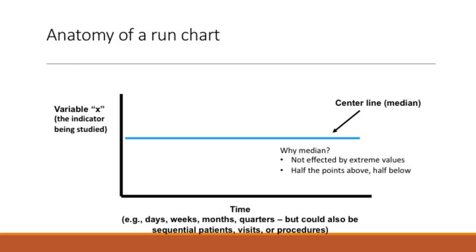Here is the anatomy of a run chart. On the x-axis you have a variable — the variable that you're studying. On the y-axis you have time. This can be days, weeks, months, or quarters, but it can also be sequential patients or visits or procedures.